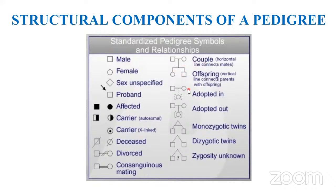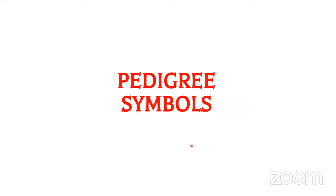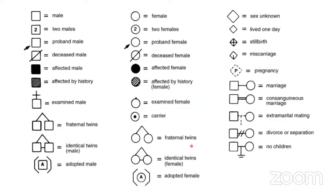Adopted individuals are shown in brackets — adopted in and adopted out. Monozygotic twins are shown as a triangle with a connecting link, and dizygotic twins as a separate triangle. There are more pedigree symbols used in charts. An examined person is shown with a small mark. Stillbirth and miscarriage have different symbols as well, since they also require interpretation in the pedigree.